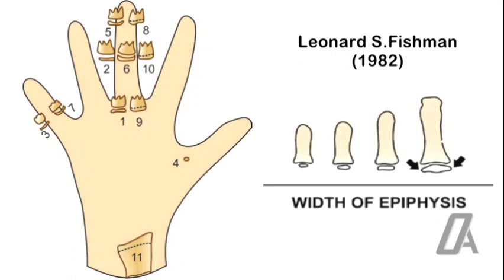Stage one: when epiphysis is as wide as diaphysis, found in proximal and middle phalanx of third finger, and middle phalanx of fifth finger.